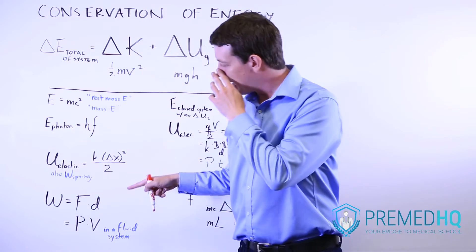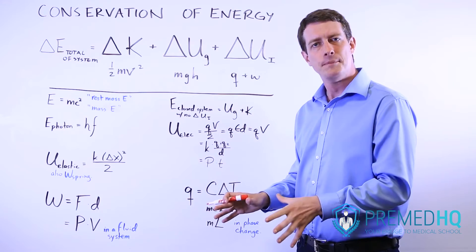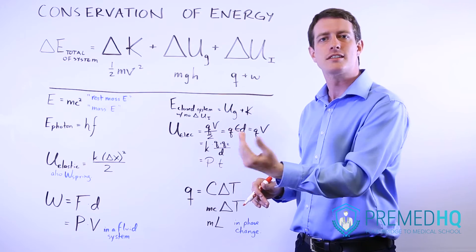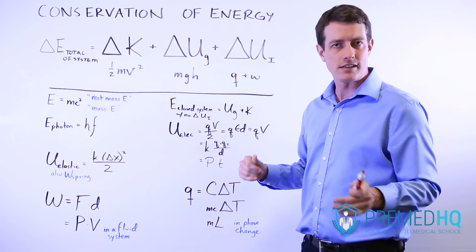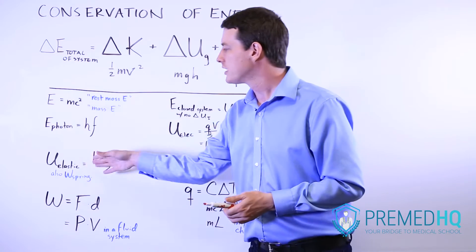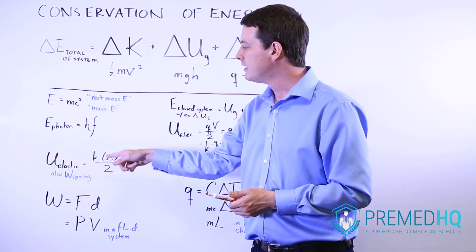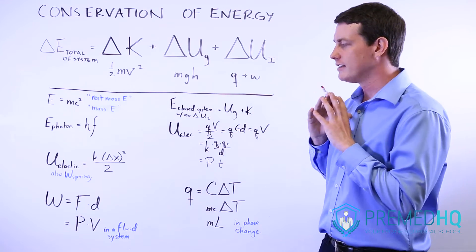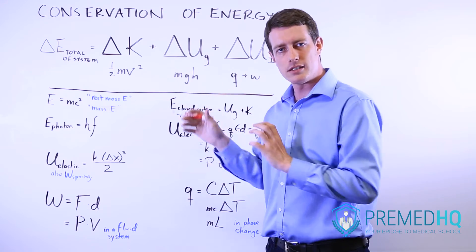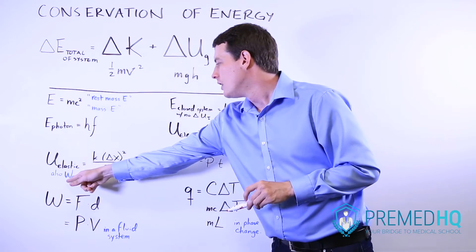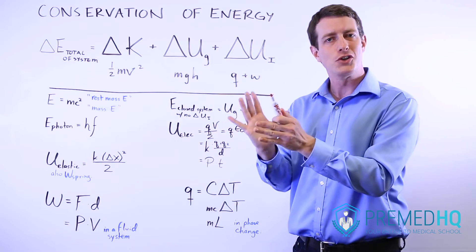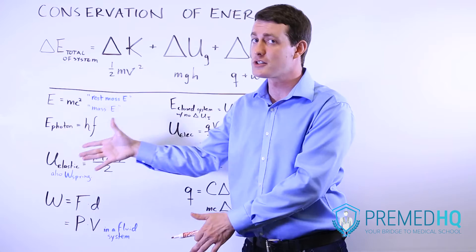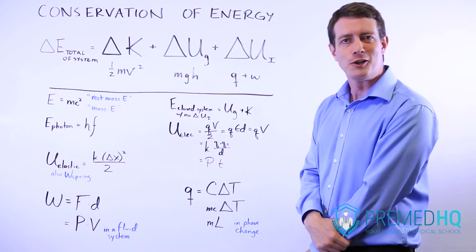The potential energy of an elastic medium — and oftentimes that elastic medium is a spring, but it can be anything that obeys Hooke's law. Remember that Hooke's law says force equals k, the spring constant, times x. The potential energy that can be stored in that is equal to k times the change in position squared divided by two, so ½kΔx². Notice that this is also the work performed by a spring as it moves a certain distance. This connection between potential energy and work is also something you'll see in electrical potential energy type equations.